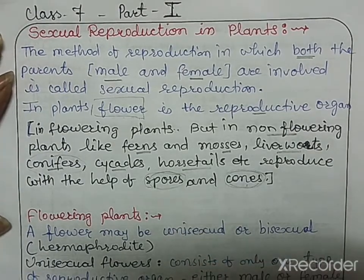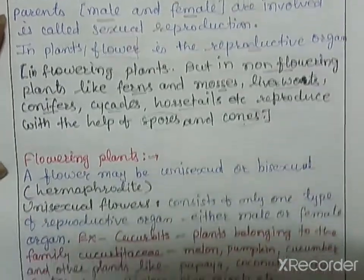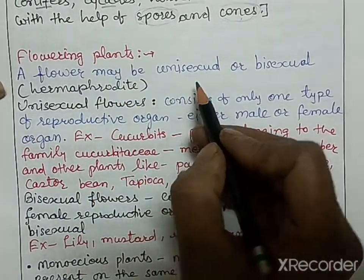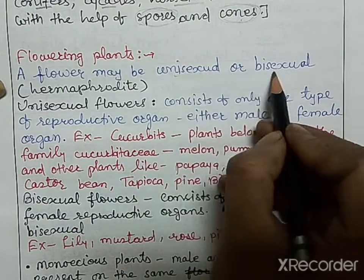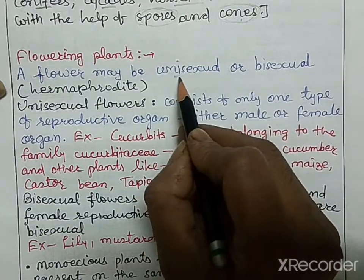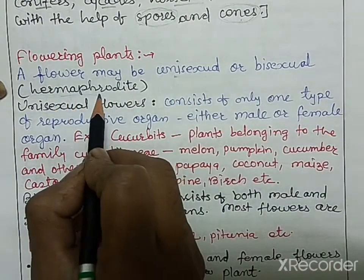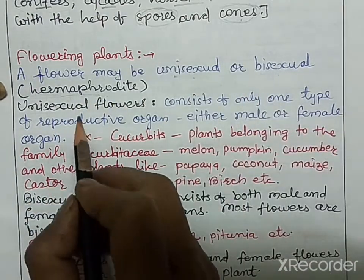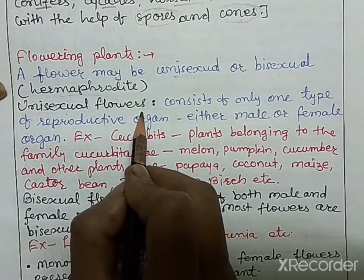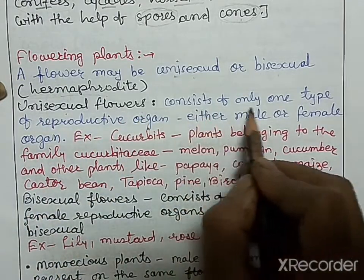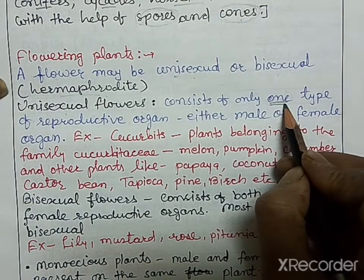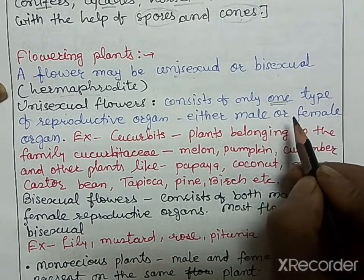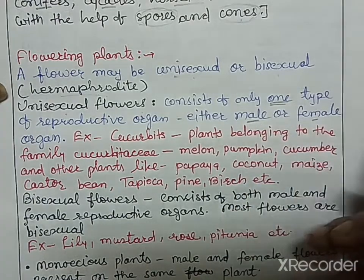In flowering plants, a plant may be unisexual or bisexual — bisexual is also known as hermaphrodite. Unisexual flowers consist of only one type of reproductive organ, either male or female.